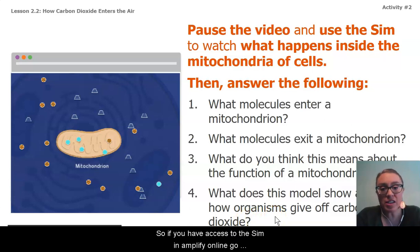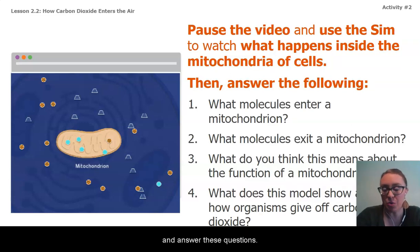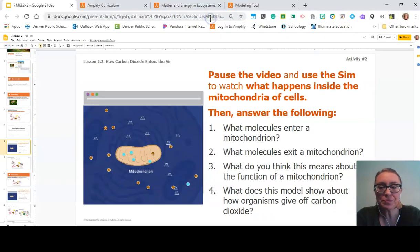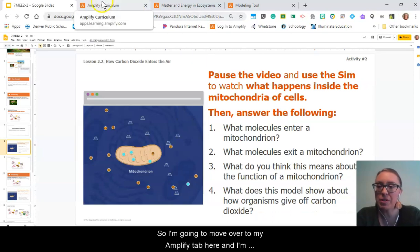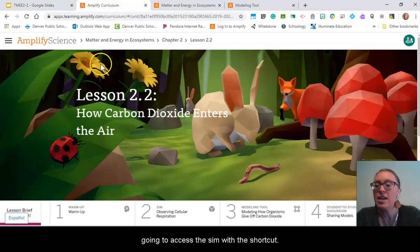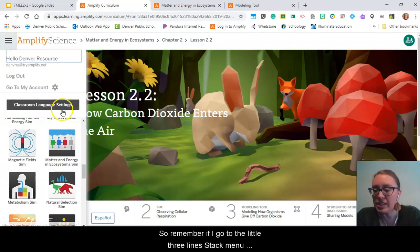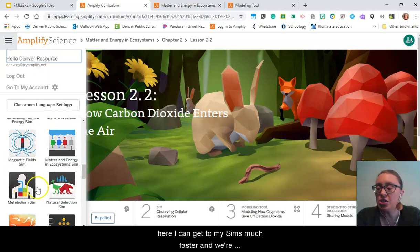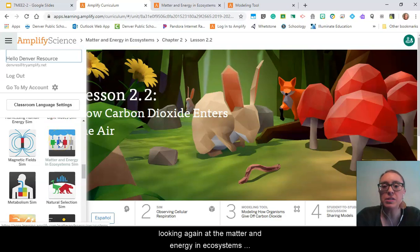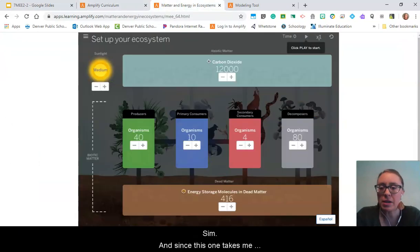If you have access to the sim in Amplify online, go ahead and pause the video, get to your sim, explore and answer these questions. Otherwise, you can follow along with me. I'm going to move over to my Amplify tab here and access the sim with the shortcut. Remember, if I go to the little three line stack menu here, I can get to my sims much faster. We're looking again at the matter and energy and ecosystem sim. Since this one takes me a minute to load, I already have it up and ready.